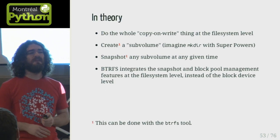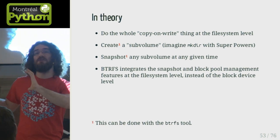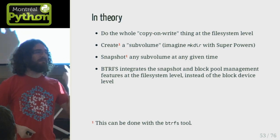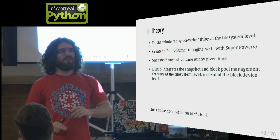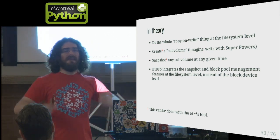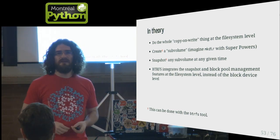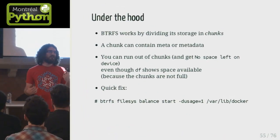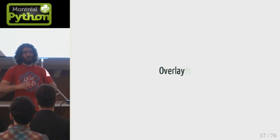BtrFS is something in between — snapshots happen at the filesystem level. BtrFS lets you designate a directory as a subvolume that you can snapshot. When you snapshot a subvolume, it's as if you made an instant full copy of a directory, even if it's 5 gigs — or a 60-gig geographic database. In that case being able to make instant snapshots becomes very interesting. There are some shortcomings with BtrFS in practice with Docker that I won't have time to discuss here, but I'll be around afterwards if you want to hear about the horrible things BtrFS can do to your disks.